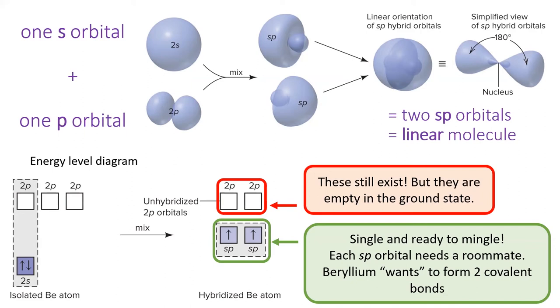Very importantly, beryllium still contains two empty 2P orbitals. Empty orbitals still exist, and are often very important during organic chemistry reactions.